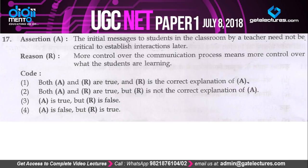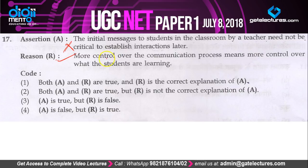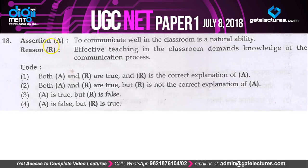Question 17 is an assertion-reason question. Assertion: initial message to students in the classroom by a teacher need not be critical to establish interactions later — this is false, it is derogatory to the idea of teaching. Reason: more control of the communication process means more control over what the students are learning — this is right. If you plan your communication and speak things critical to learning, you control what students learn. So A is false, R is true — option 4.